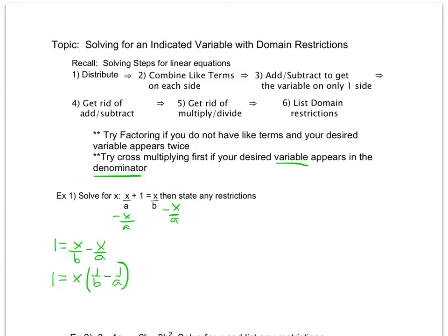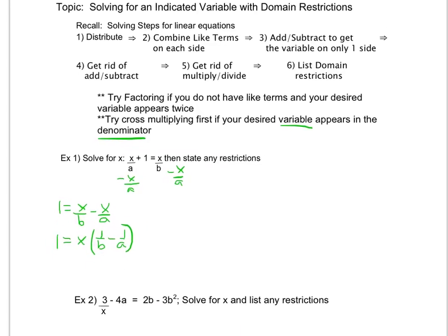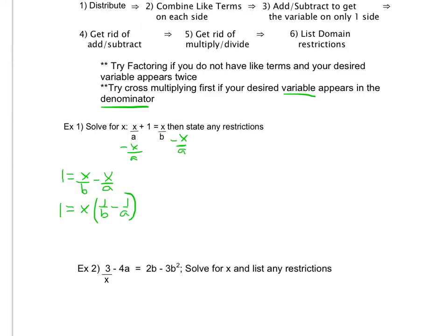Now if my only goal is to solve for x, therefore get x by itself, if I divide by this, I will have my x by itself. So I'm going to go ahead and do that. It's not going to look real nice, but I'm going to have the x by itself. So I'm going to have 1 over 1 over b minus 1 over a equals x. Again, what did I do? I divided both sides by this expression.